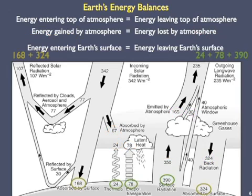The third energy balance is at the Earth's surface. The energy absorbed by Earth's surface includes about 168 watts per meter squared directly from insolation and 324 from the back radiation emitted by the greenhouse gas molecules in the atmosphere. This 492 watts per meter squared is exactly balanced by the energy leaving Earth's surface: 24 plus 78 plus 390 from the three sources shown in grass green.